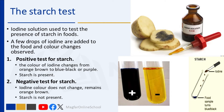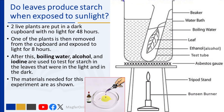If there is no starch present, the color of iodine does not change and it remains orange-brown — this is a negative test for starch. Do leaves produce starch when exposed to sunlight? To answer this question, a common experiment has been used to determine if leaves manufacture starch and if light is required for the manufacture of starch.